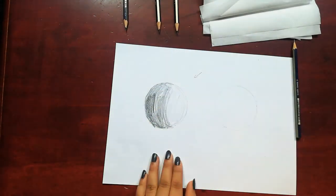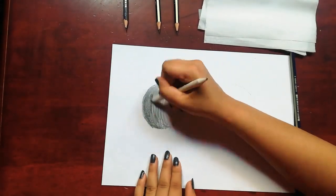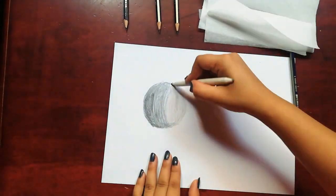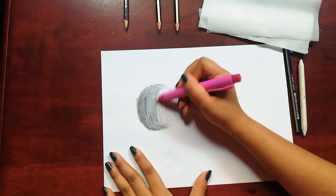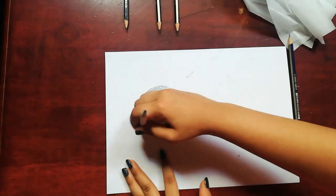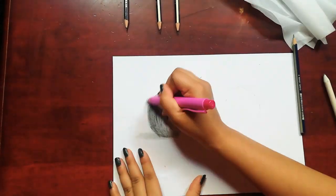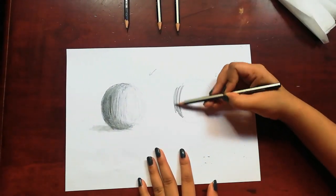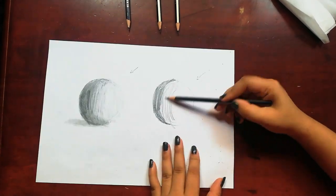You can see with the blending stump it's not really smooth. If you want a smooth texture for your sketch, I think tissue paper would be better.